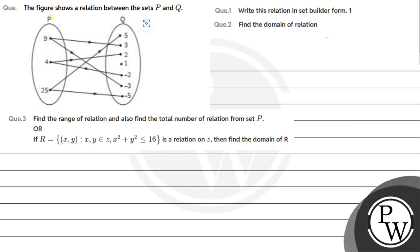Hello, let's read the question. The question says: find the figure showing the relation between set P and Q. Question 1 is: write this relation in set builder form, find the domain of the relation, find the range of the relation, and also find the total number of relations from set P.